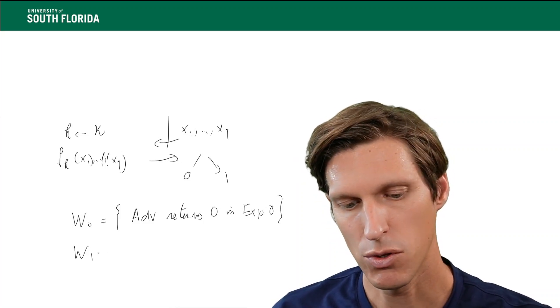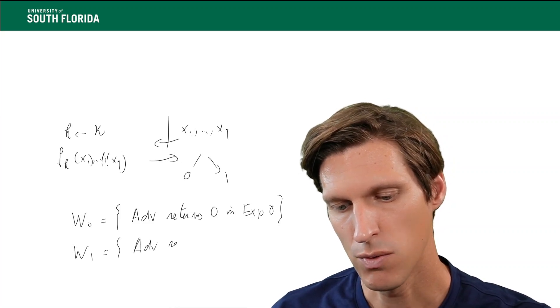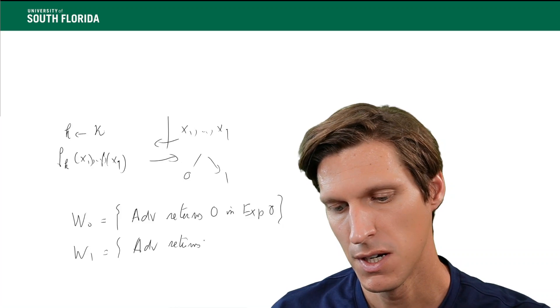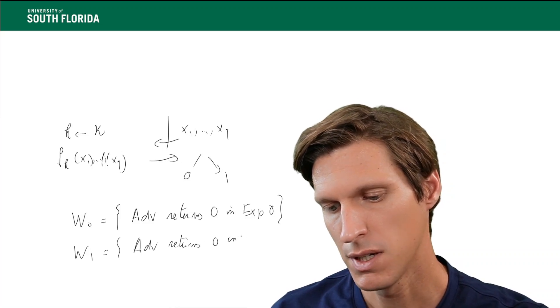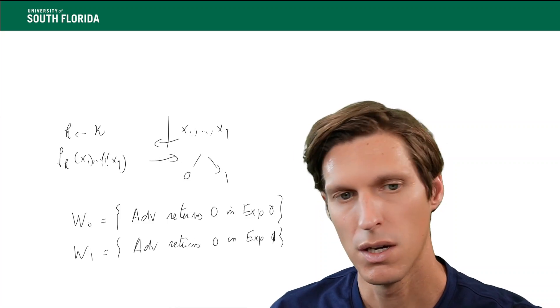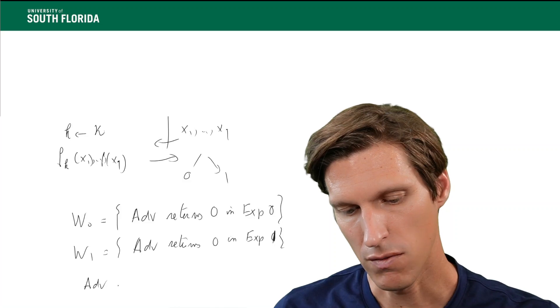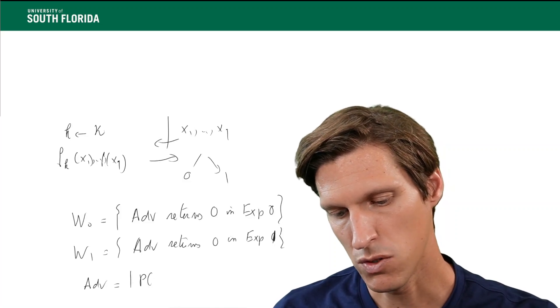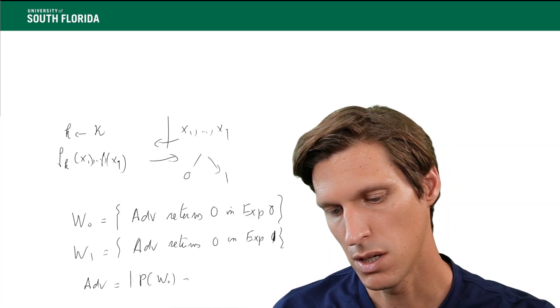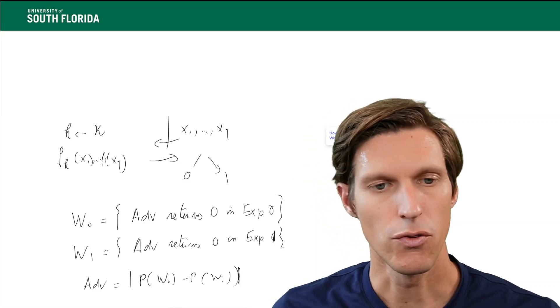And we'll look at w1, which is defined as the adversary returns 0, but this time in experiment 1. And then the advantage of the adversary is the difference between the probabilities of these two events. Now, the absolute value, of course.